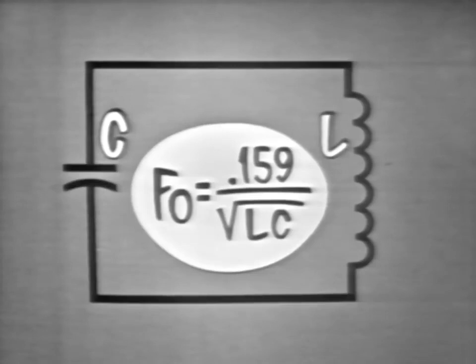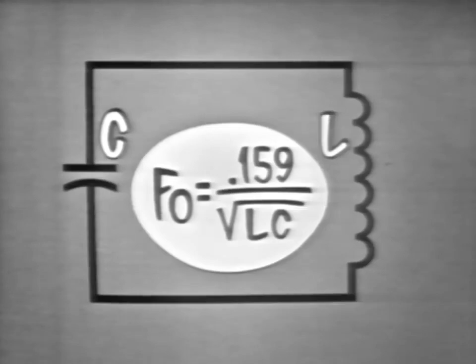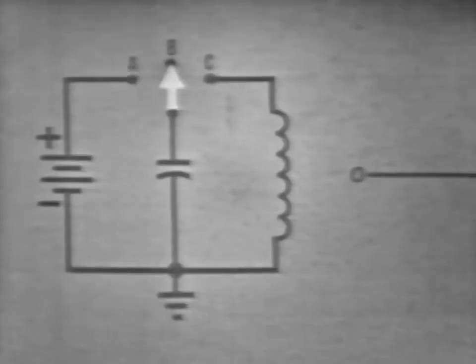Now, to be sure you understand how this circuit will oscillate, let's follow the action step by step. First, we'll need a power supply to provide the initial energy. In this case, a battery. This switch will allow the capacitor to be connected to the battery or to the coil.